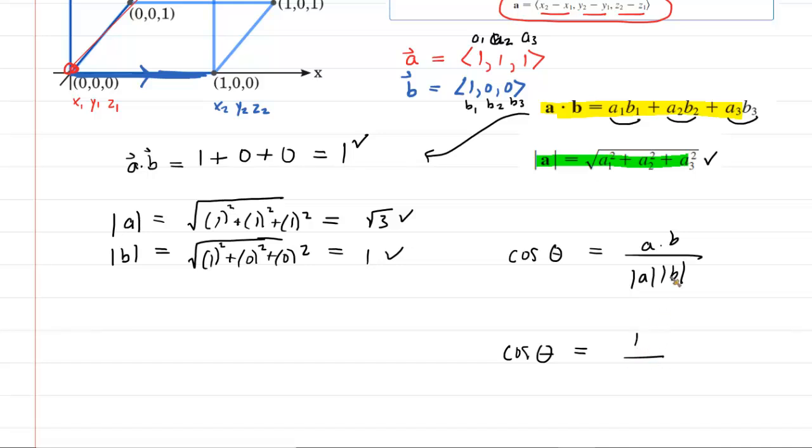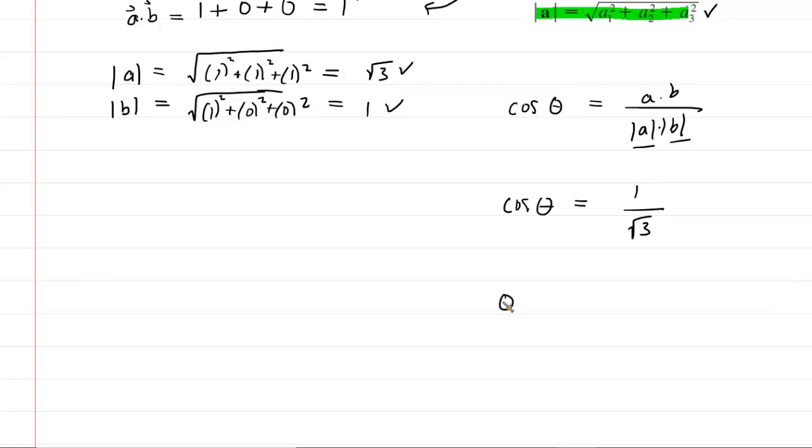That would be the square root of 3 times 1, so it's just the square root of 3. And then finally, to find the actual angle, we would just do the inverse cosine of this value, 1 over square root 3.